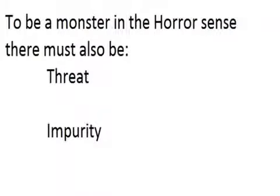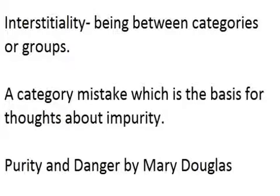Being a threat is fairly obvious - it means they can do damage or kill the heroes, and by extension the audience. Carroll gets his thoughts on impurity from Mary Douglas, who in the 70s wrote Purity and Danger. Impurity is through this concept called interstitiality - being in between categories or groups. That's what the dictionary definition of interstitiality is. Our thoughts on things being impure come from category mistakes, according to Miss Douglas.